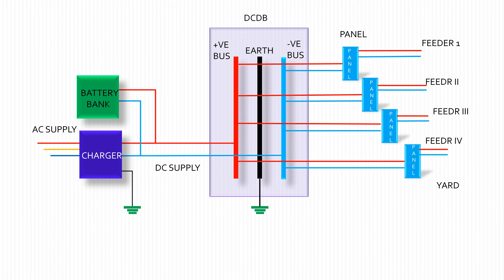The DC supply system of a substation is a very important subject. For its reliability, it plays an important role for uninterrupted power supply — as circuit breaker closing, tripping operation of different relays, indication and annunciation etc. depend on this DC supply. So it is called the heart of the substation.